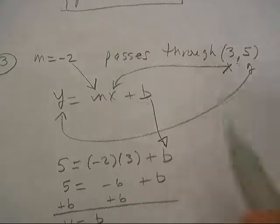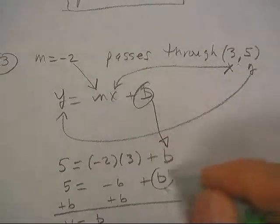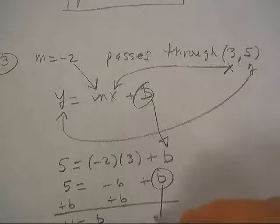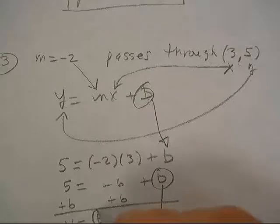Once we get b solved for, it goes right there. Look, b's right here, and that was the slope from up above. That makes that one pretty good.